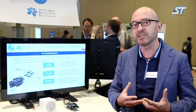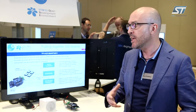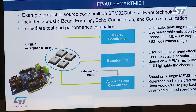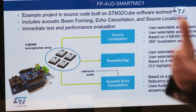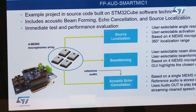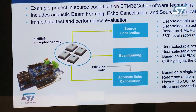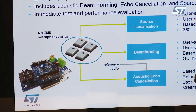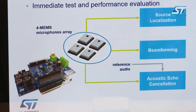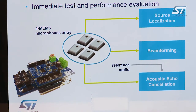The software package has some libraries implemented to address audio applications. One library is for source localization to understand the angle of arrival of the sound. Another is beamforming, to select a portion of the audio if you want to focus on one particular speaker in a conversation. The third one is acoustic echo cancellation. Those are the three libraries that ST offers in the package.